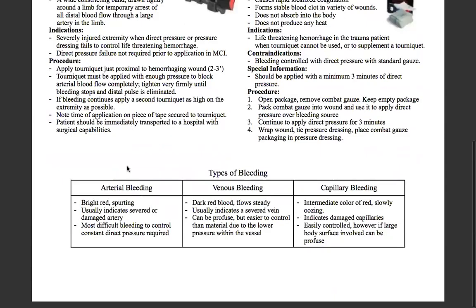The different types of bleeding: arterial bleeding is characterized by bright red and spurting blood, usually indicating a severed or damaged artery. It's the most difficult bleeding to control and requires constant direct pressure, sometimes taking upwards of 20 minutes. Venous bleeding is dark red blood that is steady flowing, usually indicating a severed vein. It can be profuse but is easier to control than arterial due to the lower pressure within the vessel.